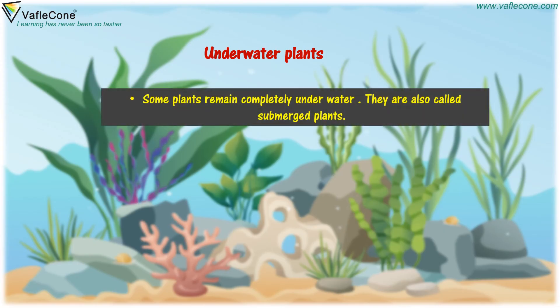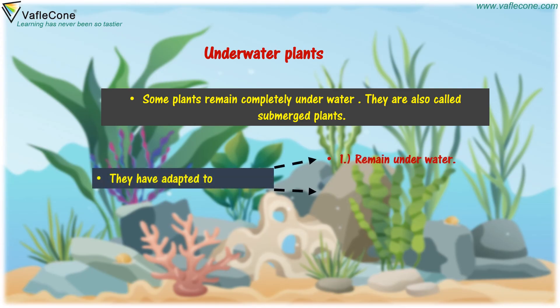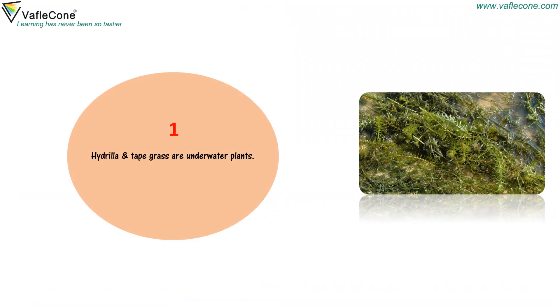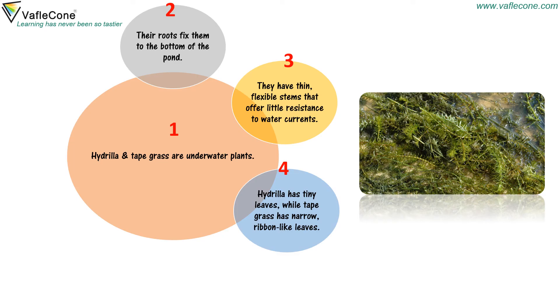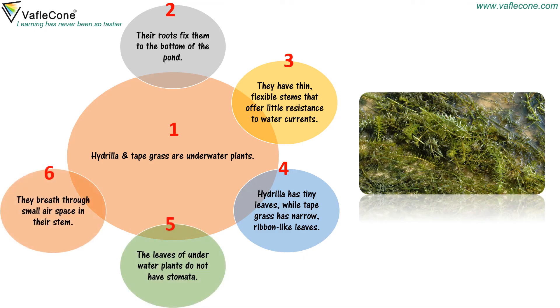Some plants remain completely underwater and are also called submerged plants. They have adapted to remain and breathe underwater. Hydrilla and tape grass are underwater plants. Their roots fix them to the bottom of the pond, and they have thin, flexible stems that offer little resistance to water current. Hydrilla has tiny leaves while tape grass has narrow ribbon-like leaves. The leaves of underwater plants do not have stomata — they breathe through small air spaces in their stem.